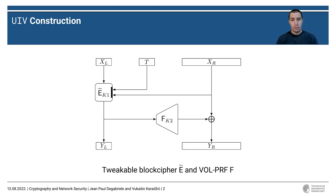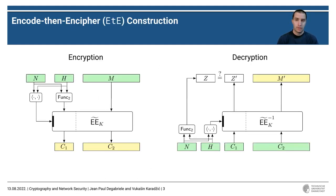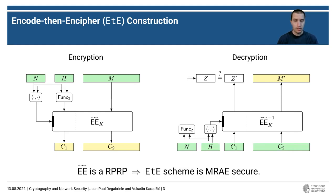Since RPRPs are a weaker primitive than SPRPs, we can use them to build AEAD schemes more efficiently. The first such scheme we present is the encode-then-encipher scheme, which you can see on the screen. If the underlying tweakable cipher is an RPRP, the ETE scheme will be misuse-resistant secure.